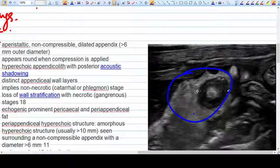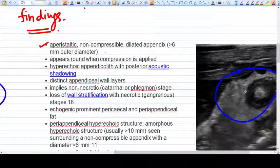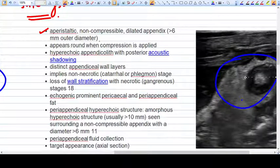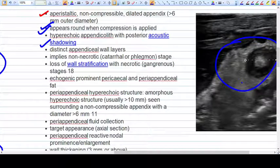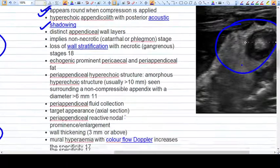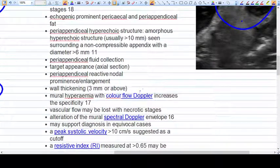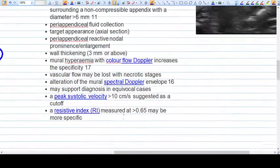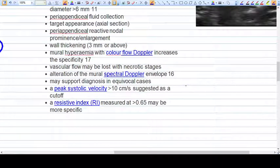You can see the aperistaltic non-compressible dilated appendix more than 6mm outer diameter. It appears round when compression is applied because it is not compressible. Acoustic shadowing and distinct appendix wall layers can be seen. Color Doppler is also important, but when necrosis happens, the color Doppler is lost. Leave the diagnosing to the radiologist.